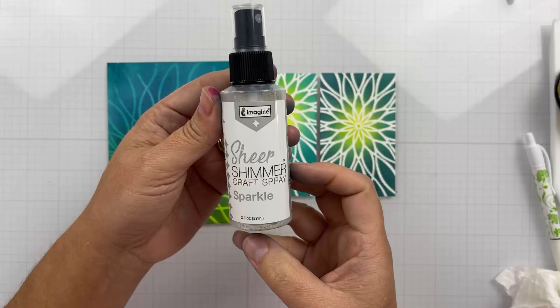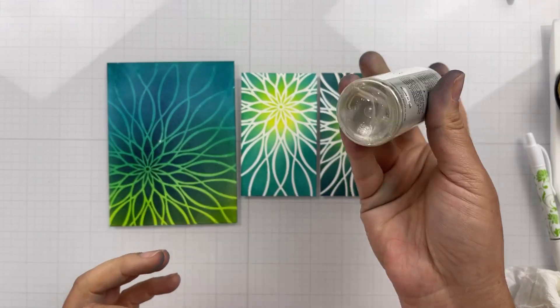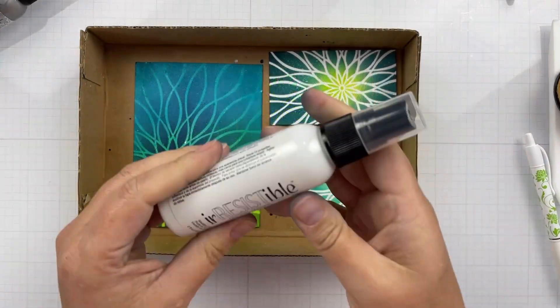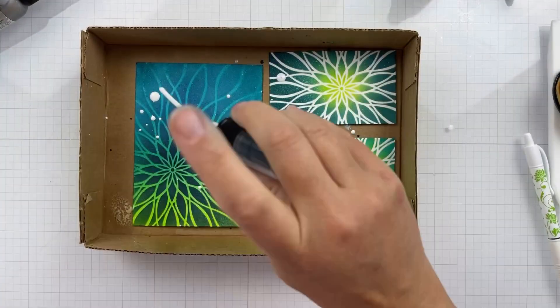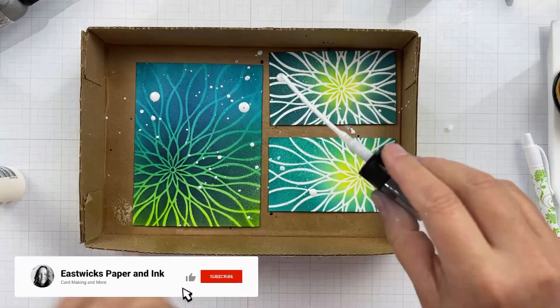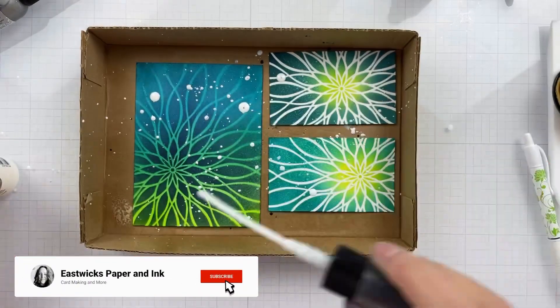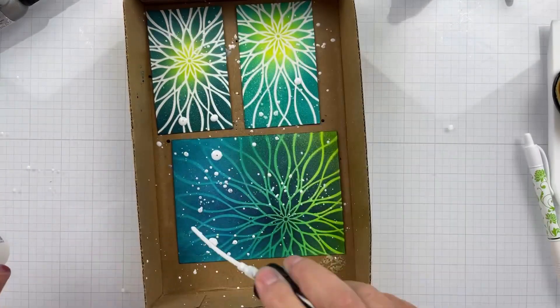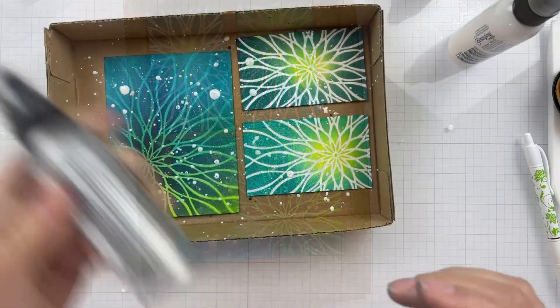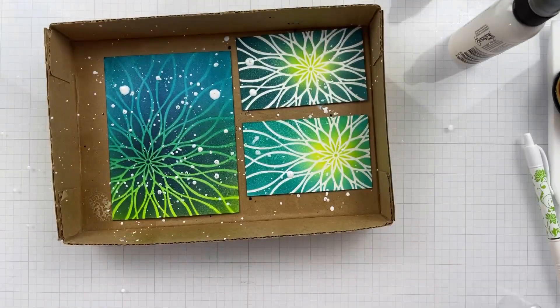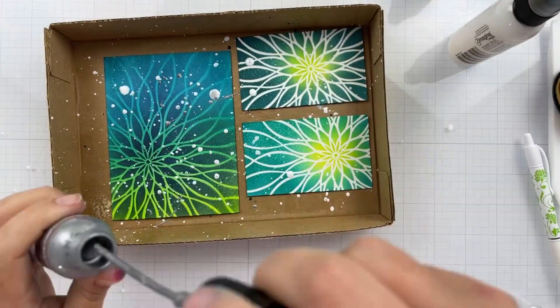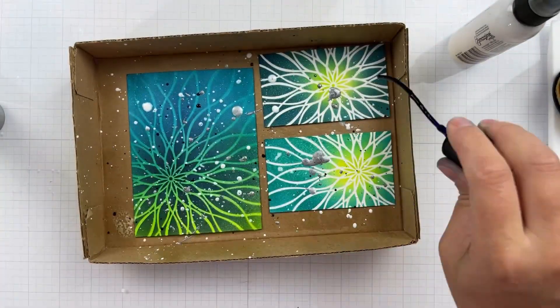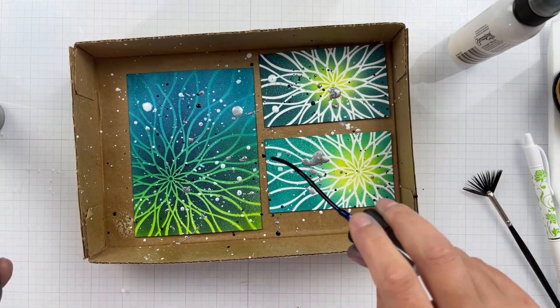Here they are all done and now we're going to grunge it up. Got some Sheer Shimmer Sparkle spray. You can use Perfect Pearls in water as well if you don't have that. Now I'm coming in with some Irresistible Texture Spray from Imagine, using Wedding Dress Silver and Paris Dusk. I bought these specifically to splatter with.